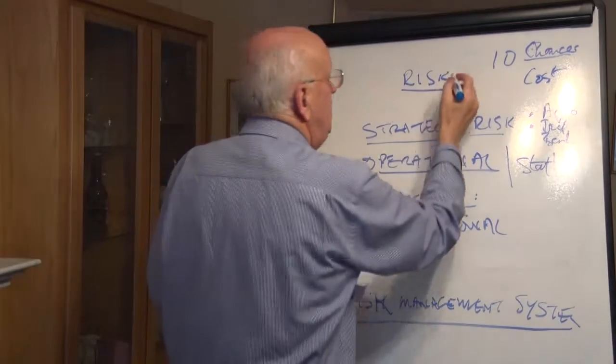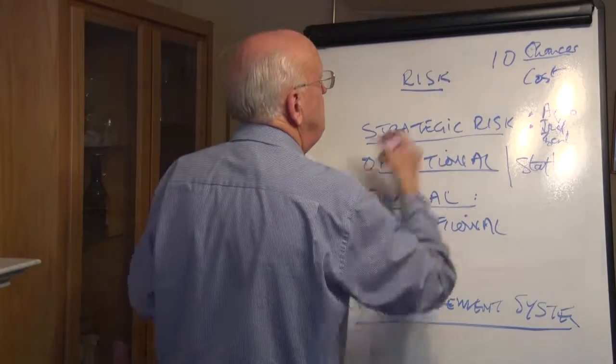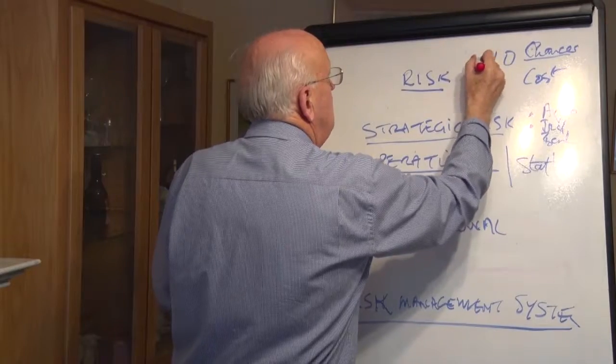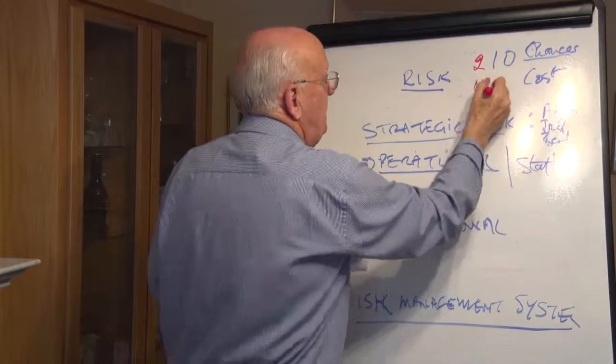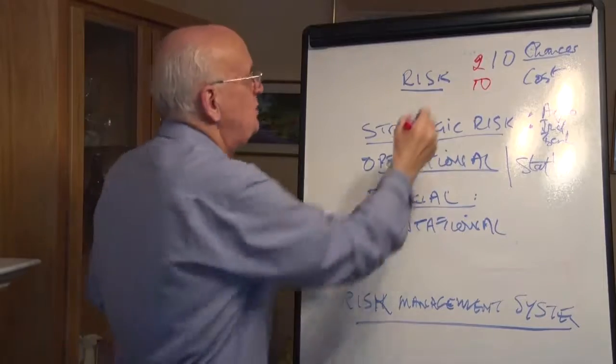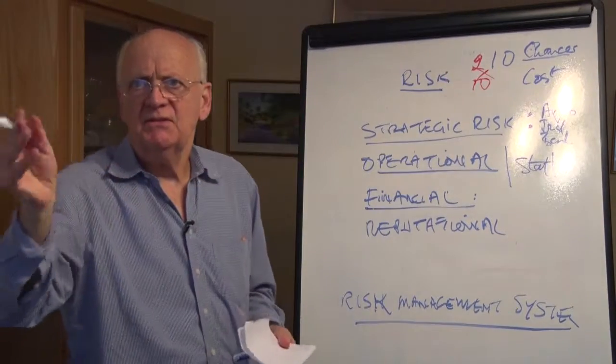So it could be only a chance of 2. But if it happened, it would be 10. Do you follow me? And you multiply the 2, and that gives you a measure of the risk.